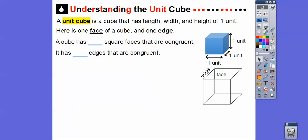So a cube has how many square faces that are congruent? You've got a top and a bottom — that's two. A left and a right — two more. A front and a back — two more. So there are six square faces. How many edges? The top has four edges because it's a square, same with the bottom — that's eight. Then there are four vertical edges going down, giving us 12 edges total.